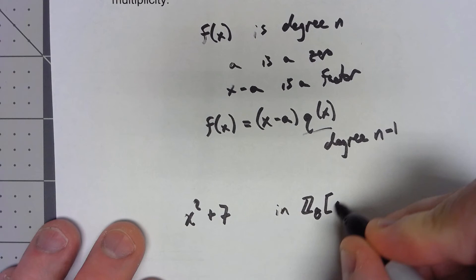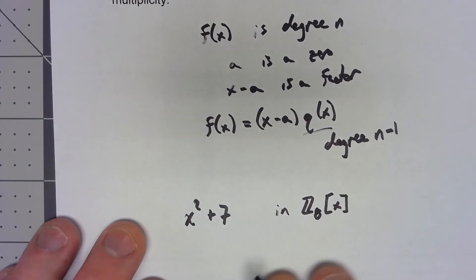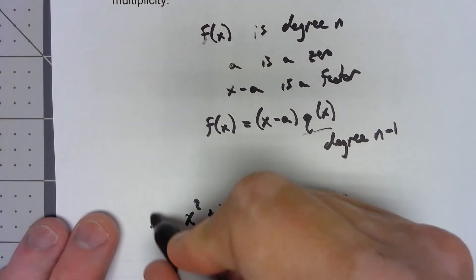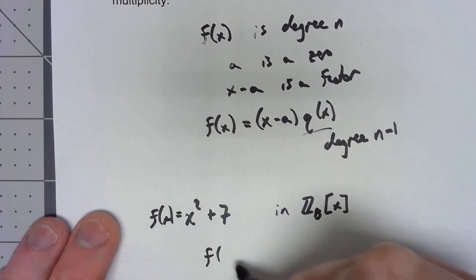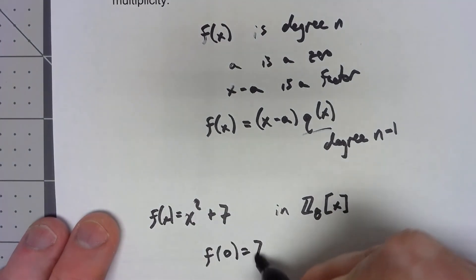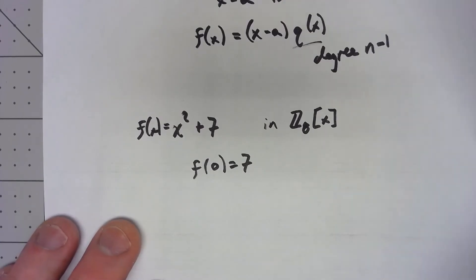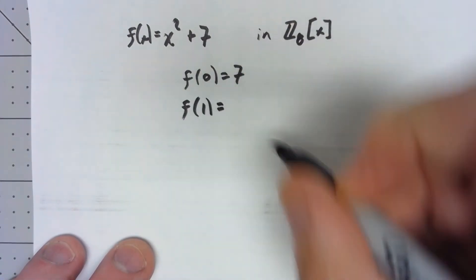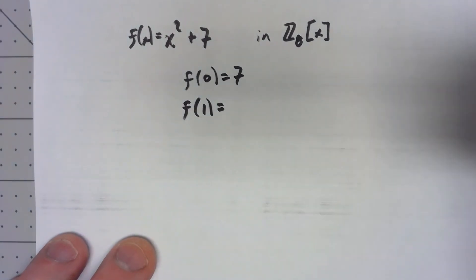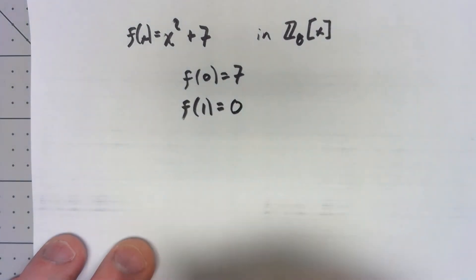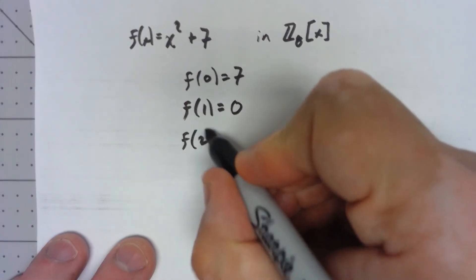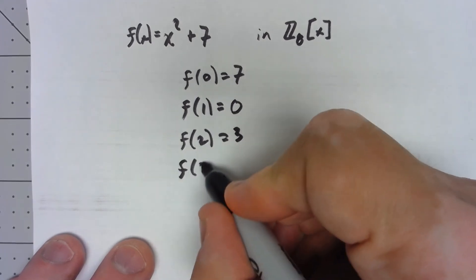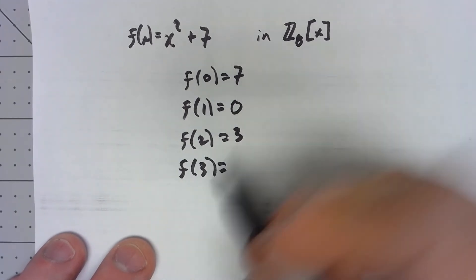Now there's only a limited number of things here. Certainly f of, if I call this f(x), f(0) is 7, f(1) is 1 plus 7 is 0 in Z₈, f(2), 4 plus 7 is 3 in Z₈, f(3), 9 plus 7 is 16 is 0 in Z₈.